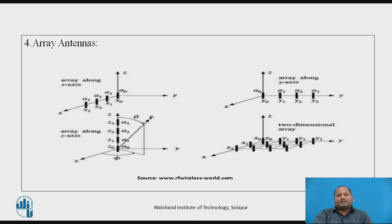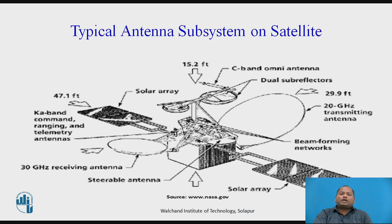Array antennas can be arranged along the y-axis, x-axis, or z-axis, meaning they can be arranged in one, two, or three dimensions. You can also see the two-dimensional array, where antennas are arranged in both the y-plane and the x-plane.